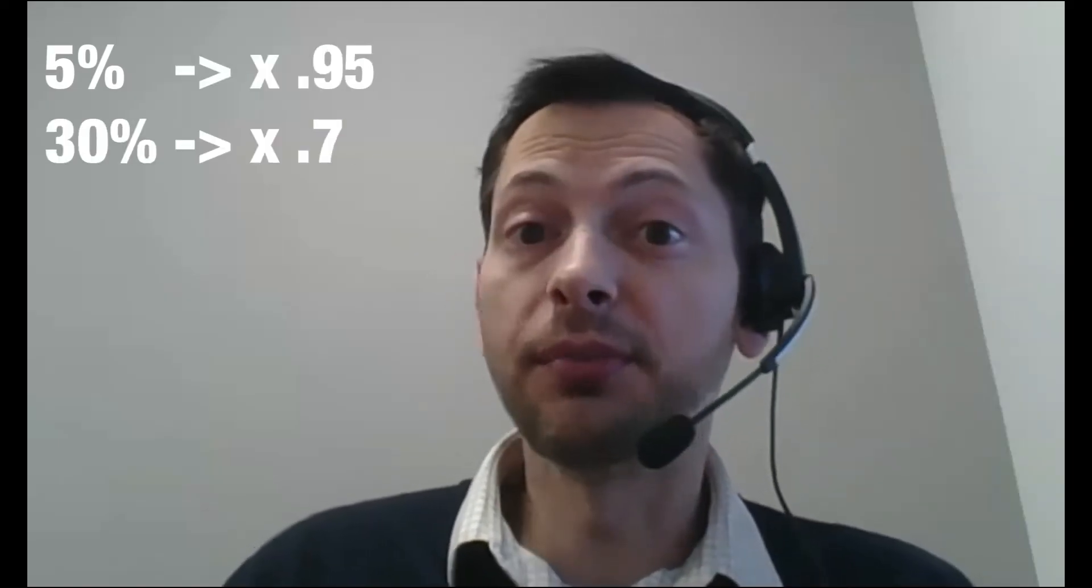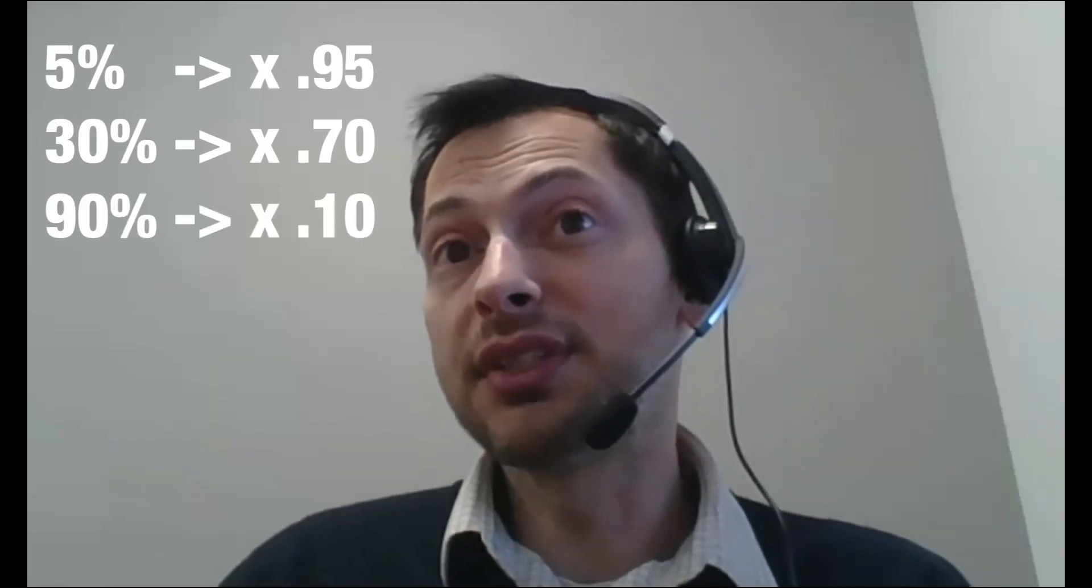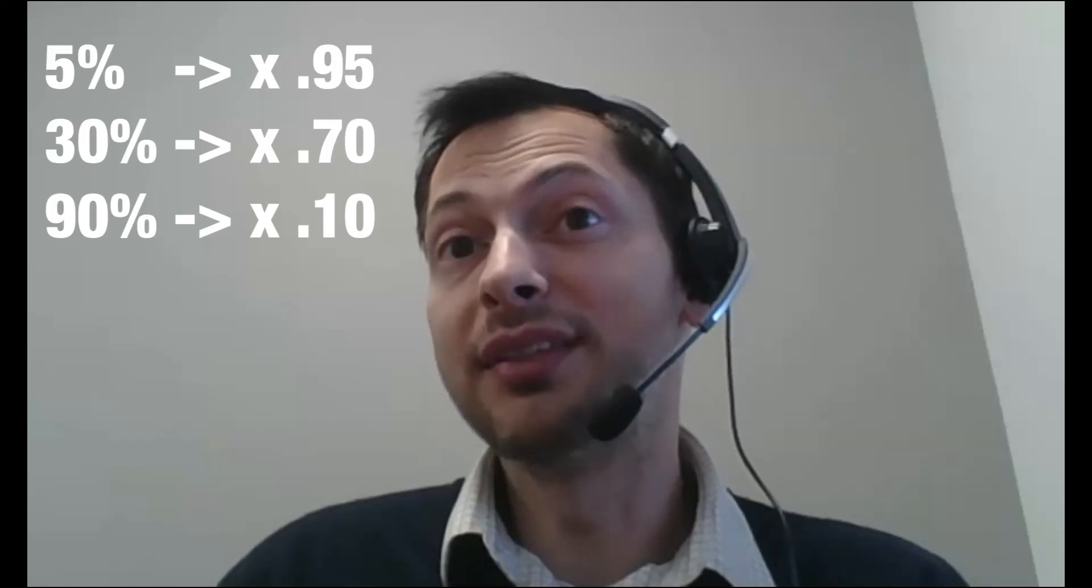For percent decrease, I would multiply by one minus whatever the percent is. So if I want to decrease the number by 5%, I'd multiply by 0.95. To decrease by 30%, I'd multiply by 0.70. To decrease by 90%, I'd multiply by 0.10.